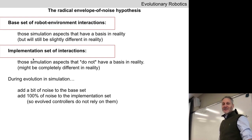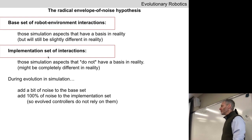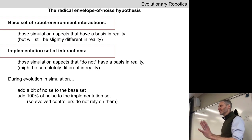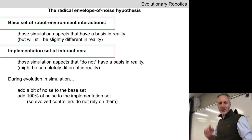It sounds like a catch-22: we want to evolve a robot with infrared sensors, but we can't simulate the infrared sensors. What do we do? This is actually tricky. So what they're going to do in this experiment is run things in a simpler simulated world and sprinkle noise on a whole bunch of different things.